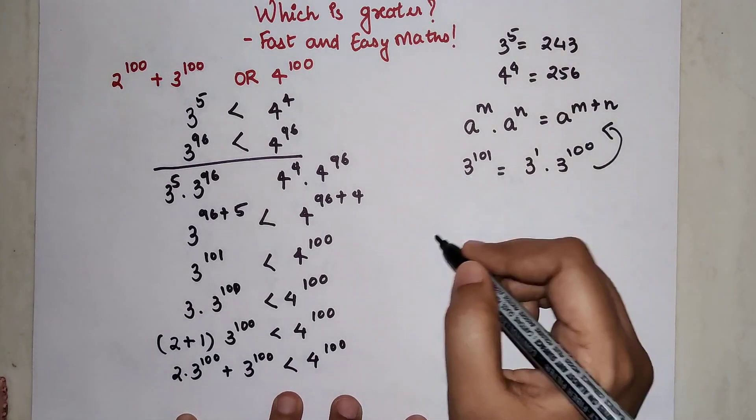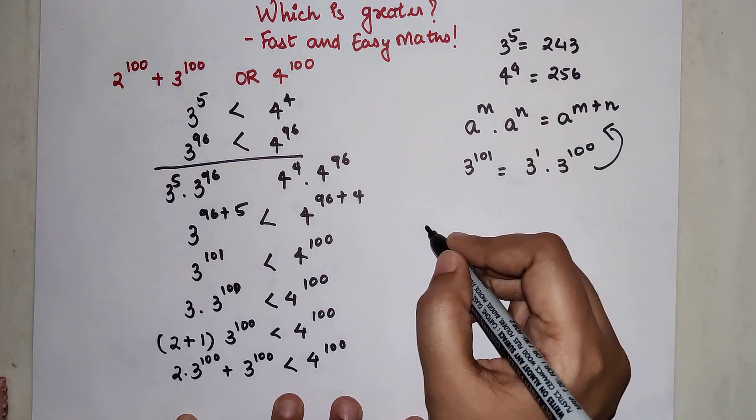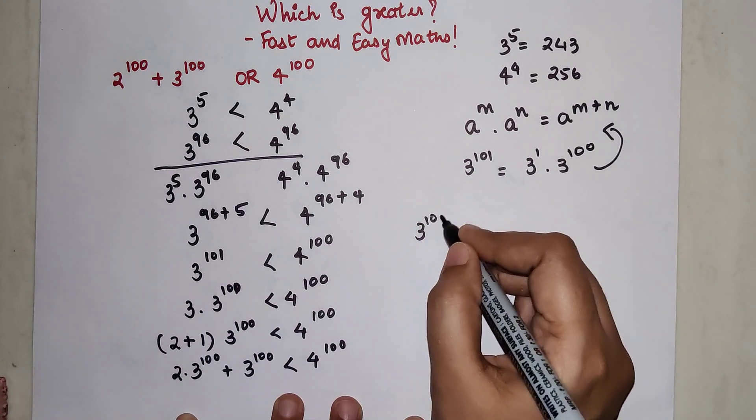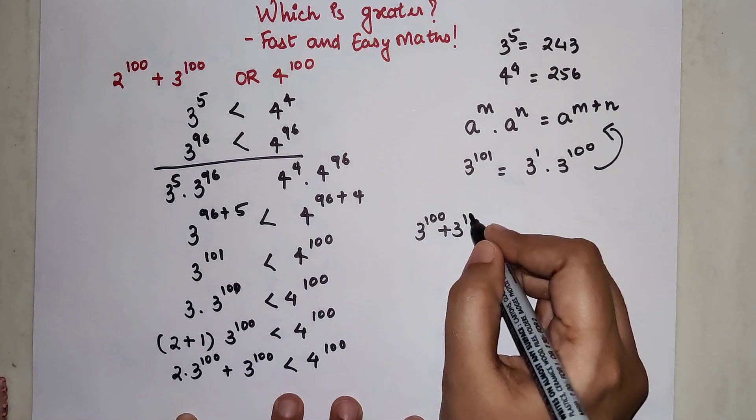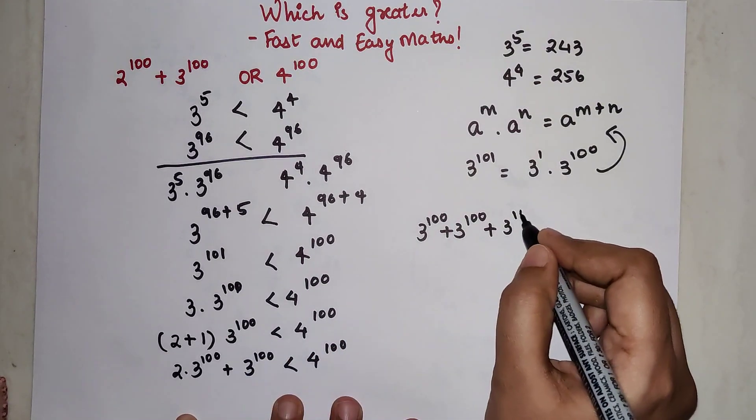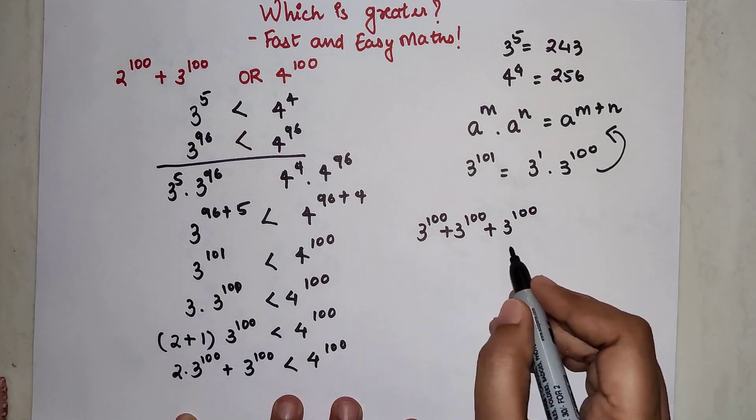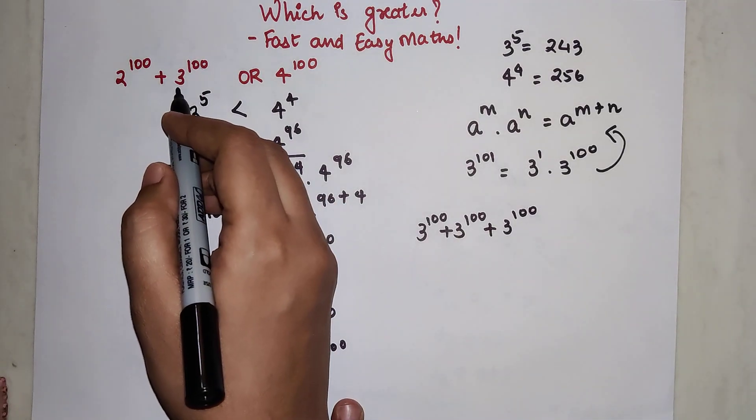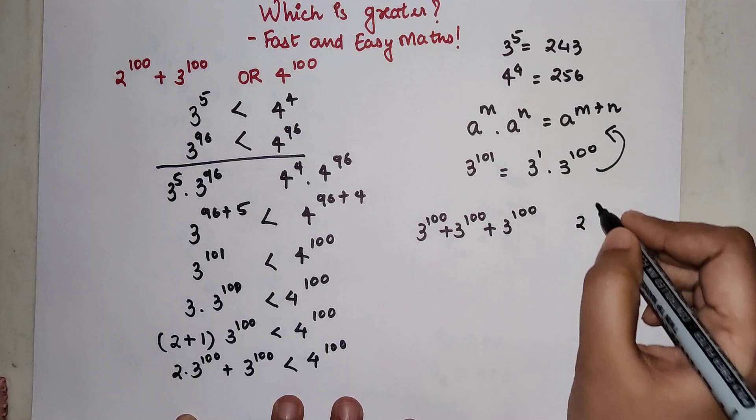Please understand, this 2 × 3^100 can be written as 3^100 + 3^100, and there is this one more 3^100. Now let's compare this to the entities given in the question.